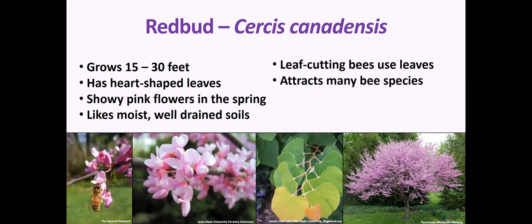Redbud is another favorite. It doesn't get very large — grows 15 to 30 feet high — has pretty heart-shaped leaves and showy pink flowers in early spring. The entire canopy of the tree turns pinkish purple and will be jammed up with bumblebees. Leafcutter bees will also use the leaves — you can look for the cutouts where they've taken sections of the leaves. It likes moist, well-drained soil, and a mature redbud also makes a nice little climbing tree for kids.